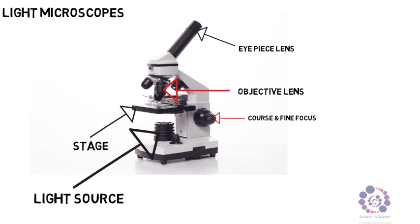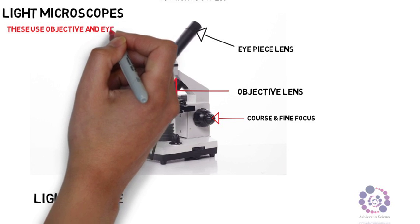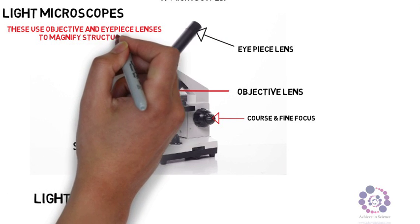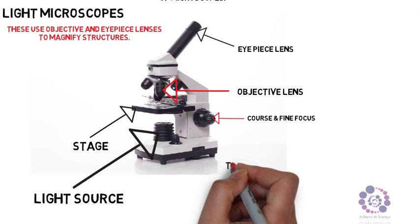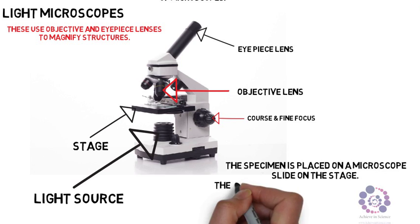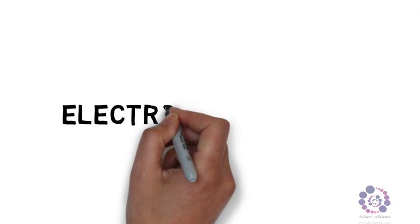Now these use the objective lenses and the eyepiece lenses to magnify structures. With this microscope, the specimen is placed on a slide and then placed on a stage. The specimen allows light to pass through them and usually is stained so you can see it more clearly.